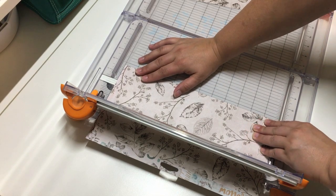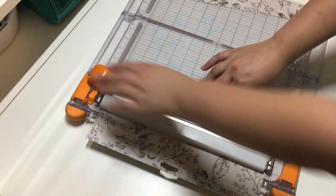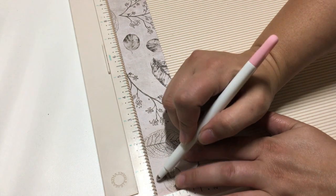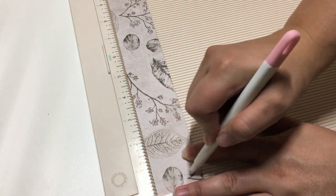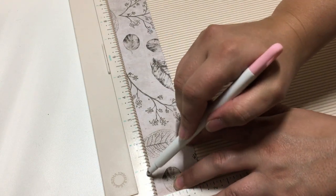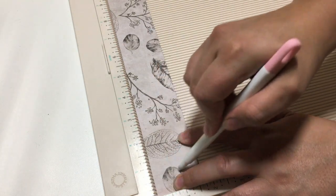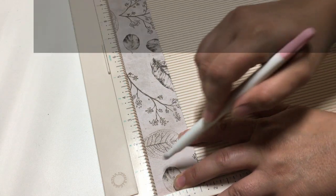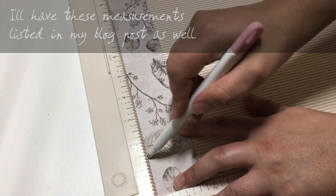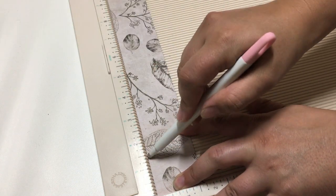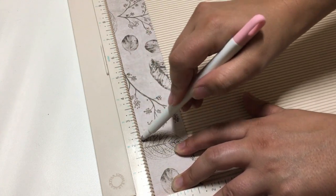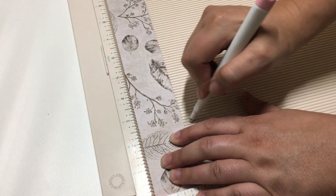Next you'll want to get out your scoring board and a scoring tool to mark your pleats. I'm going to start with a box pleat and score at the half inch mark, then go over 1/4 inch, then another half inch, then a quarter inch, then 3/4 of an inch and then a quarter inch.